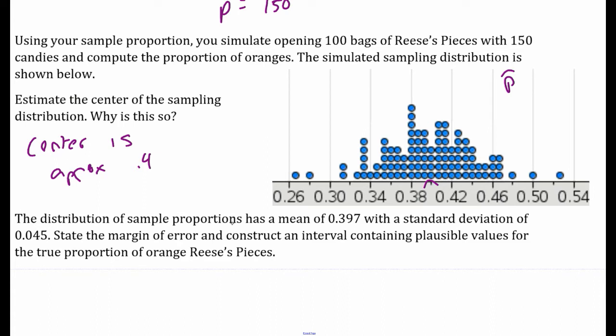The distribution of the sample proportions has a mean of 0.397, which is close to the 0.4 we approximated, and a standard deviation of 0.045.